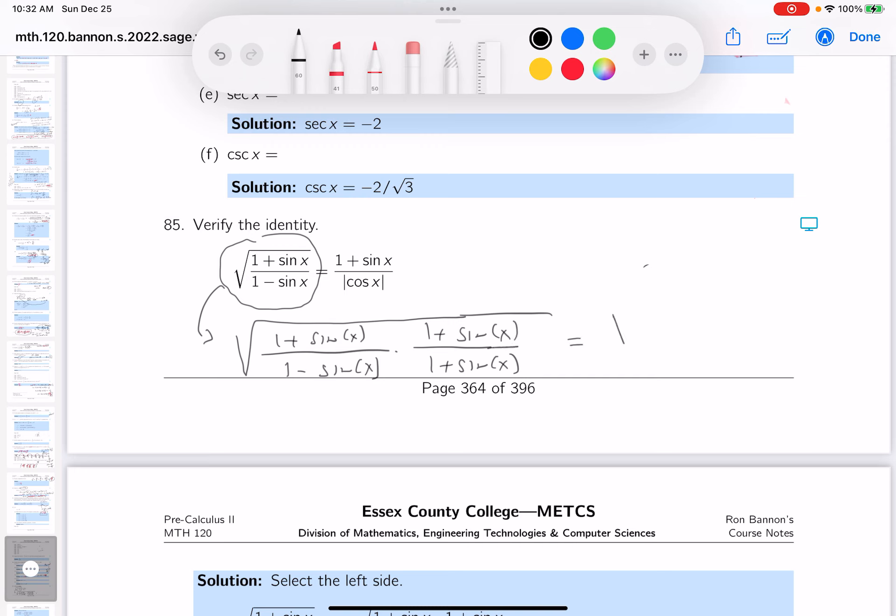What does this give you? The root of—on top you just get this, 1 plus sine x squared. And on the bottom you get 1 minus sine squared x.